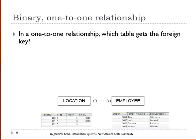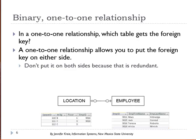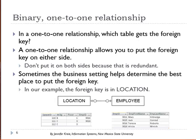In a binary one-to-one relationship, the maximum cardinality on either side is one. The question is: which table gets the foreign key? In a one-to-one relationship, you can put the foreign key on either side — just don't put it on both sides, as that would be redundant. In our example, an employee is assigned to an office location. We put the foreign key in the location table because in practical terms the employee table might have 25 to 35 attributes and is used frequently, whereas the location table is much smaller, making it more efficient to store the foreign key there.